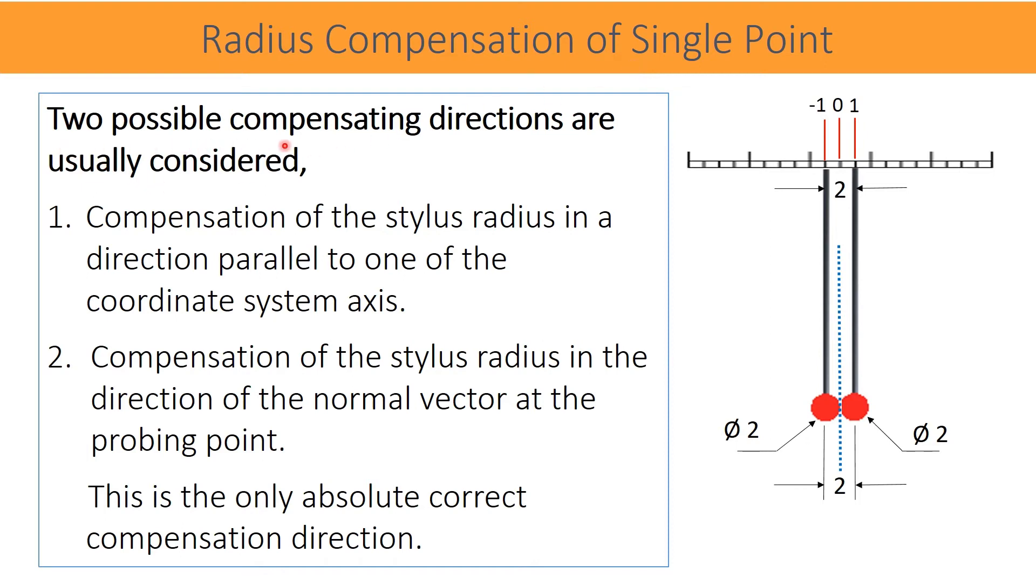There are two possible compensating directions usually considered. First is compensation of the stylus radius in a direction parallel to one of the coordinate system axes. Here, the coordinate system axis is nothing but the part coordinate system.